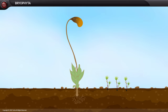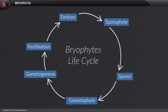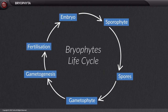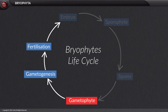The life cycle of bryophytes exhibits alternation of generations, where a sporophytic stage alternates with the gametophytic stage.